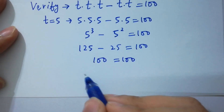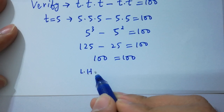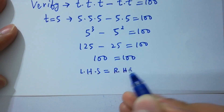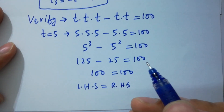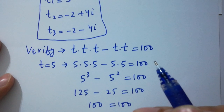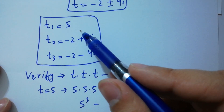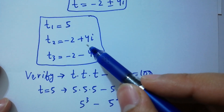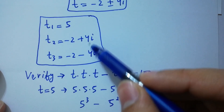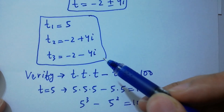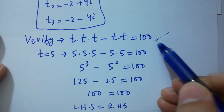Left hand side equals right hand side, which shows that the value t equals 5 is verified. Similarly, you can verify that minus 2 plus 4i and minus 2 minus 4i also satisfy this equation.